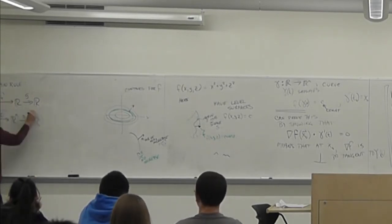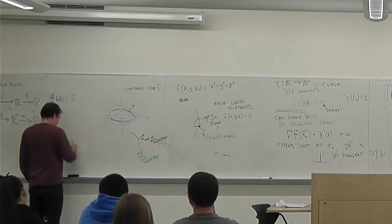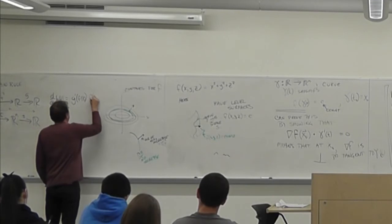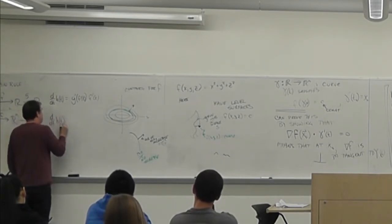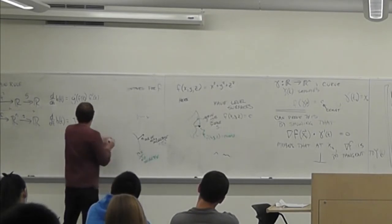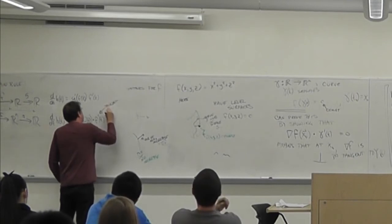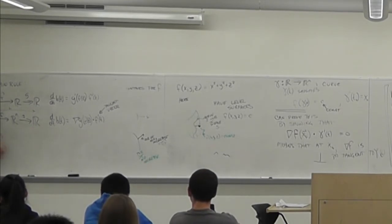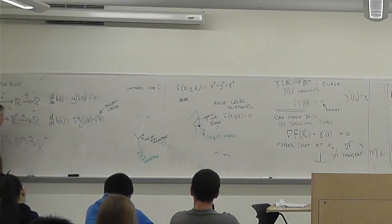In the single-variable case, d/dt of H(t) equals G prime of F(t) times F prime(t). And in the multivariable case, d/dt of H(t) is the gradient of the outer function evaluated at the inner function, dotted with the tangent vector. But more generally, we want this from Rn to Rm to Rp — we want to write a general chain rule in any dimension.